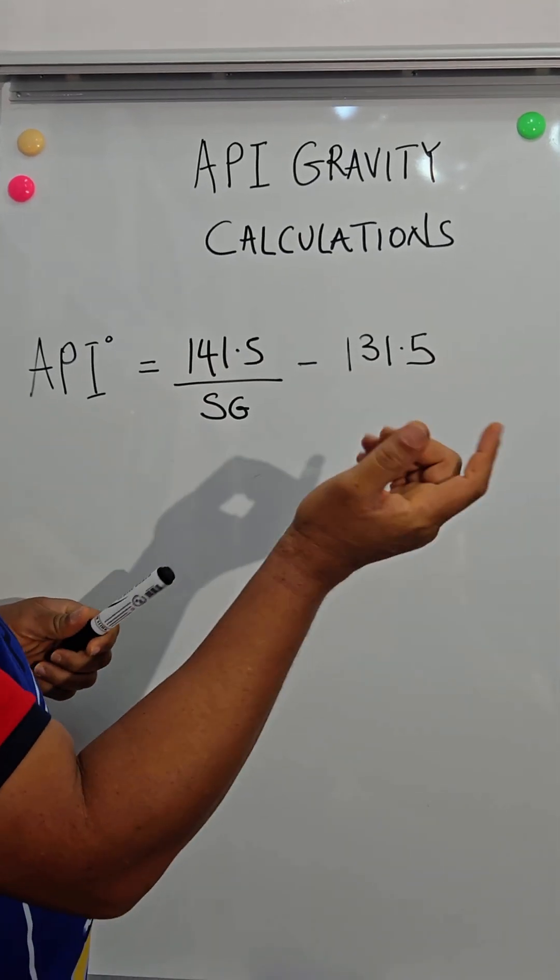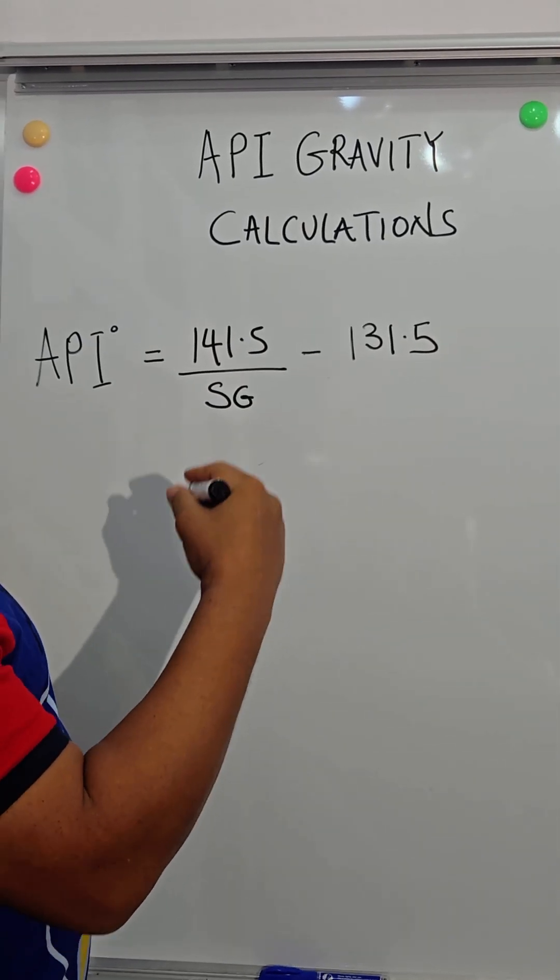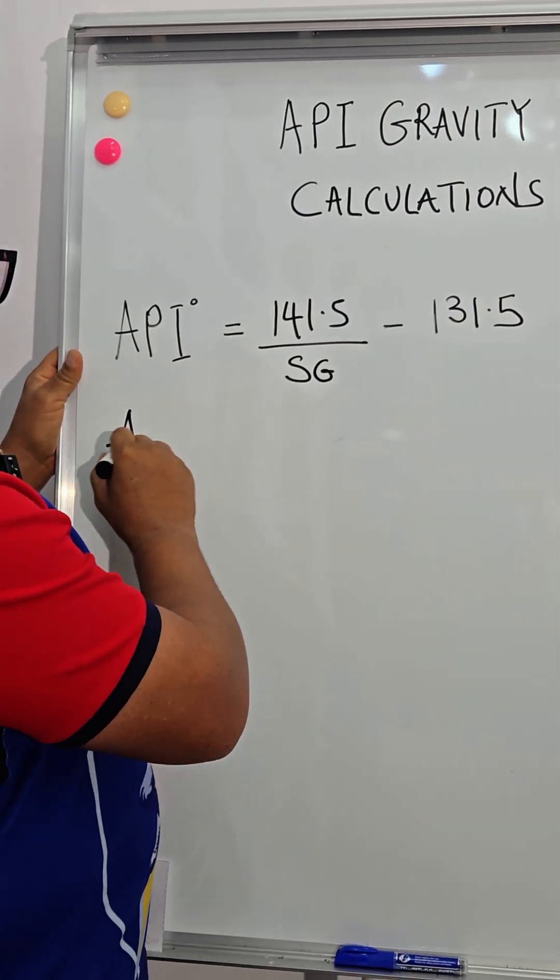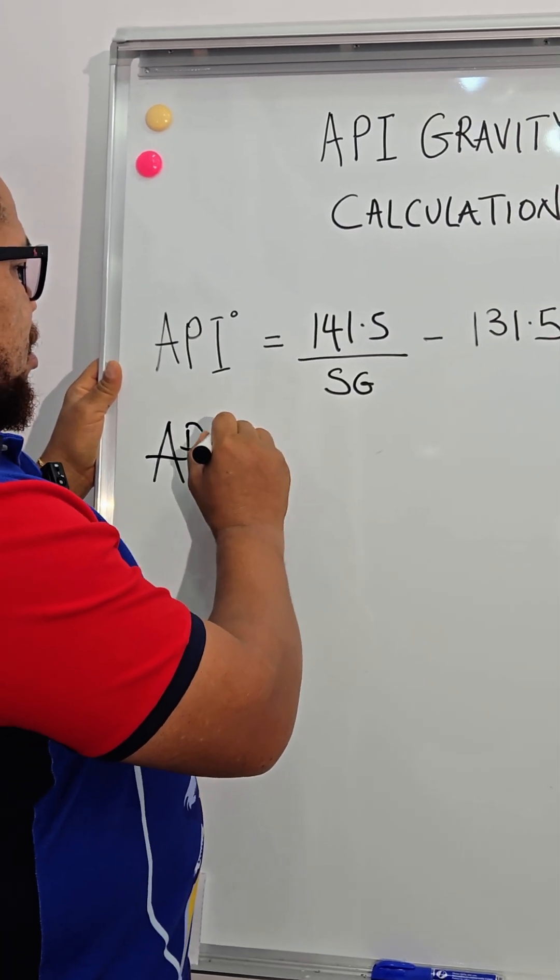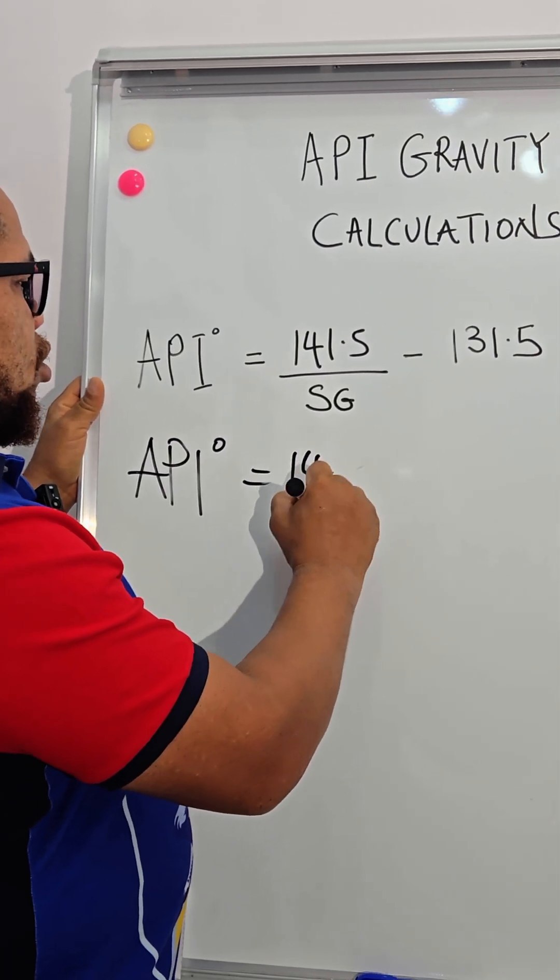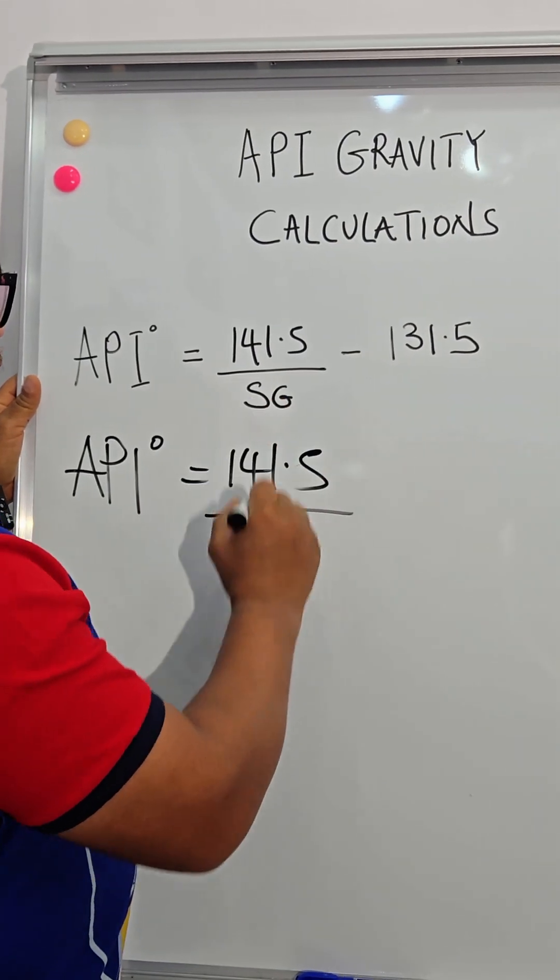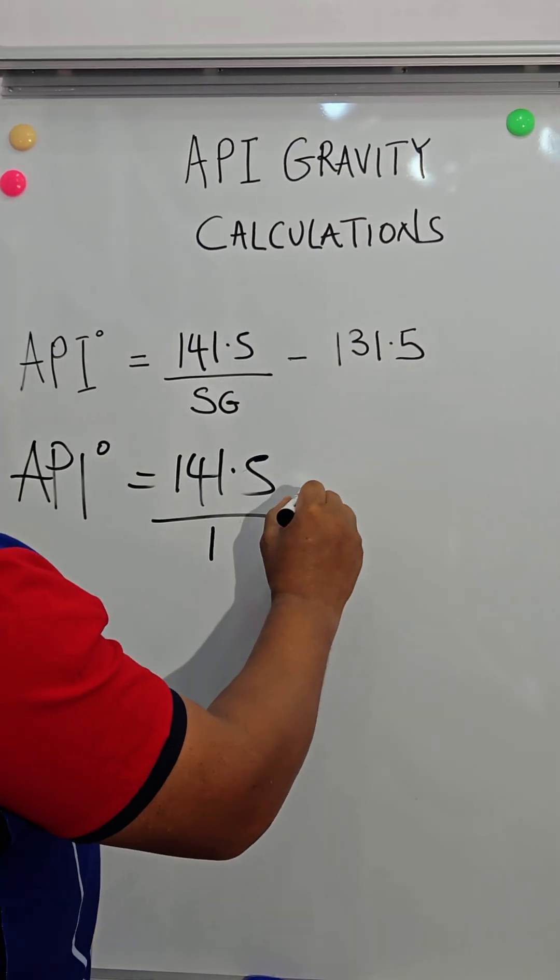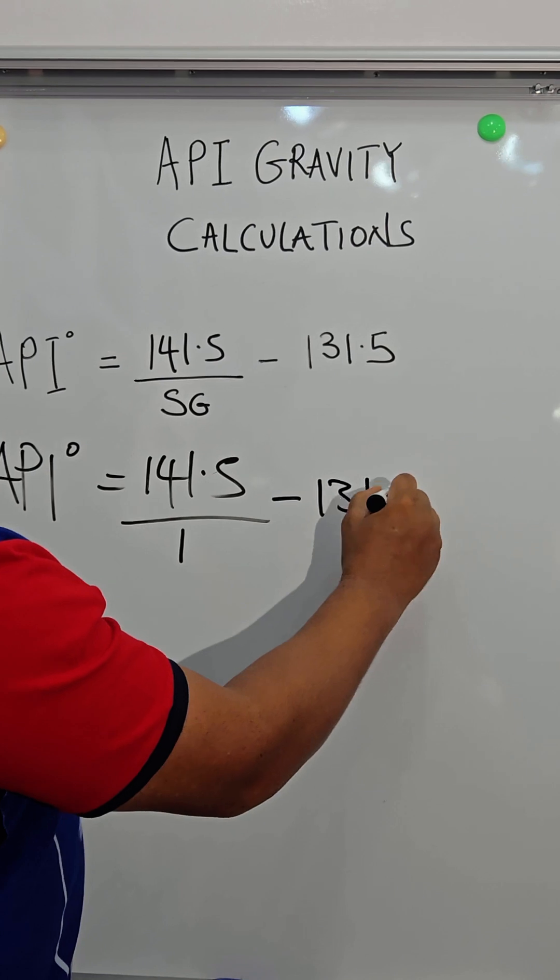So, say for example, you want to check the API of water. Water is a very good example. API is equal to 141.5 divided by 1. The SG of water is 1, so minus 131.5.